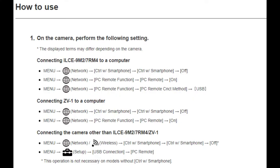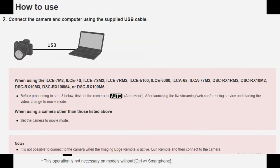When you click the how-to-use button, you will see the list of steps you need to follow. Step 1: on the camera, perform the following settings. Since I am using the Sony ZV-1, go to the Sony ZV-1 menu, go to Network, and the Control with Smartphone must be turned off. Then go to the PC Remote function — it must be turned on.